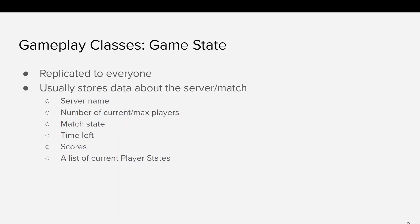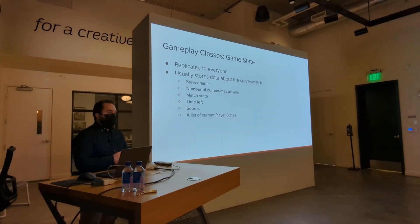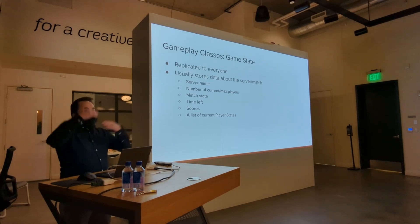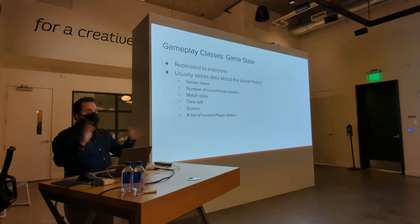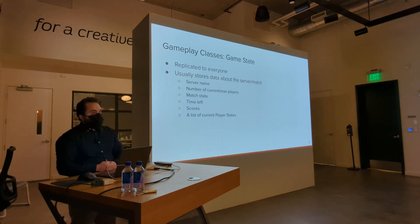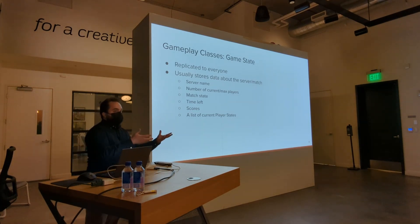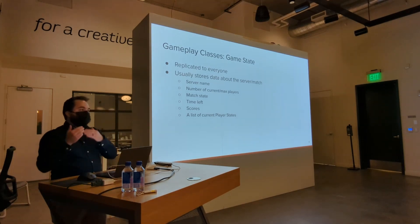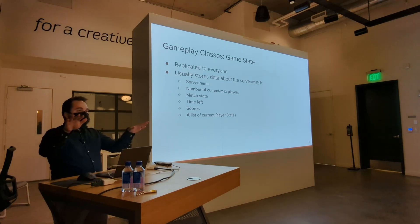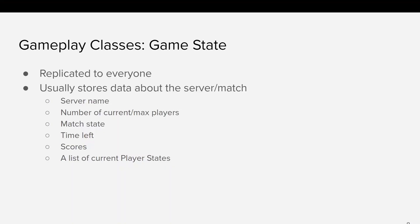Game state is different from game mode in that it's on all machines — all clients and the server. This is a great place for when something changes on the server that clients need to know about, like 'there's two seconds left in the match.' The game mode might trigger the match to start, but then it changes a variable in the game state and that gets sent to all clients. Other things like the server name, number of players, and max players are great for game state.